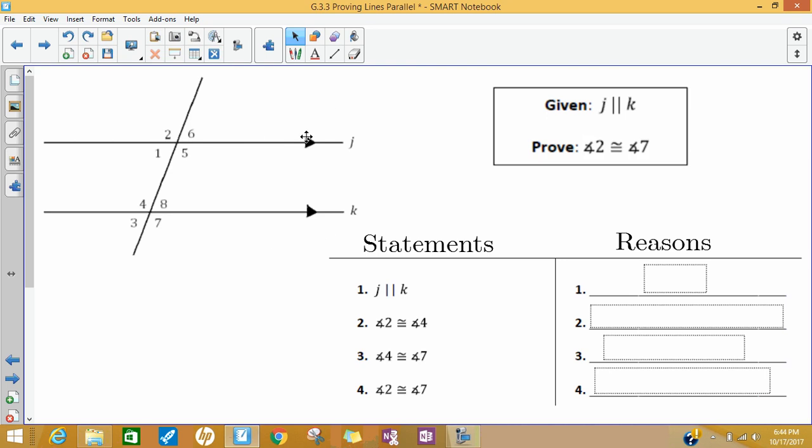Here I have two parallel lines and a transversal. I'm given some information, and this given information is something I'm told to be true. Line j is parallel to line k. I want to show, using my geometry knowledge, I want to prove that angle 2 and angle 7 are congruent. We know those are alternate exterior angles, but without that knowledge, we can still show that they're congruent to each other.